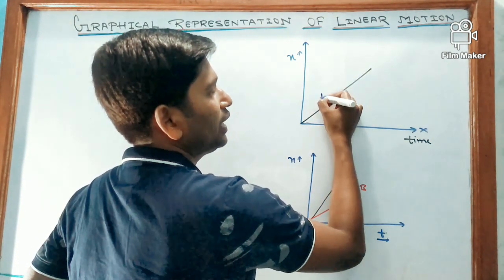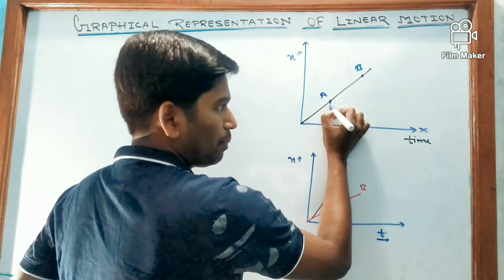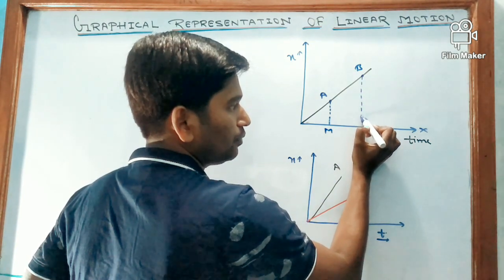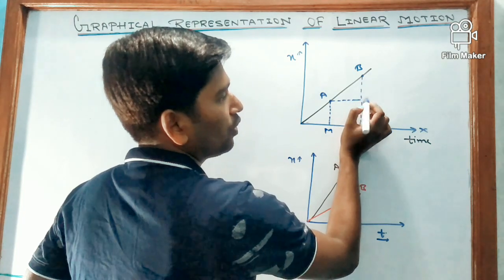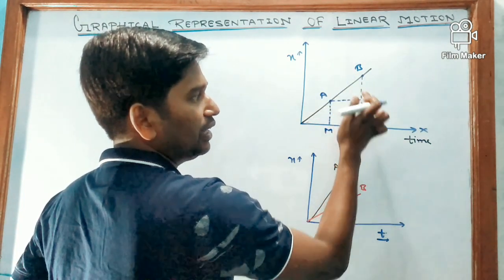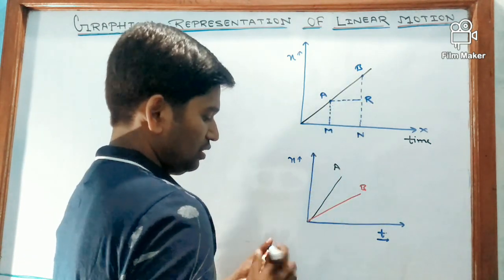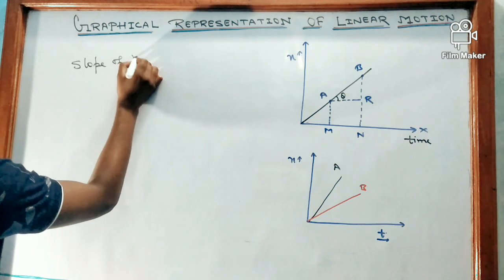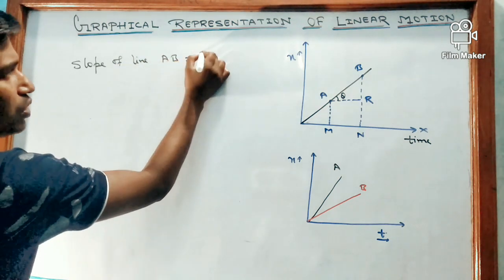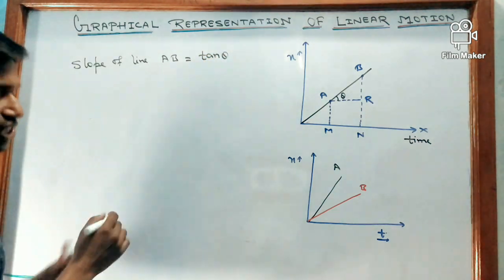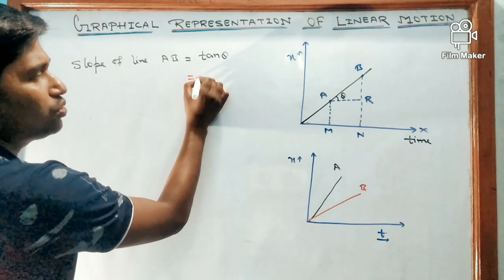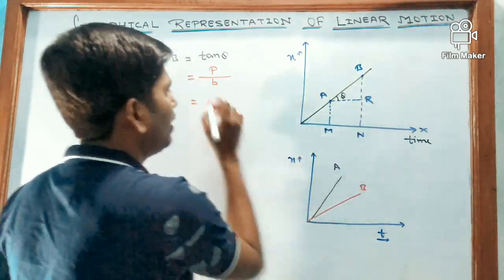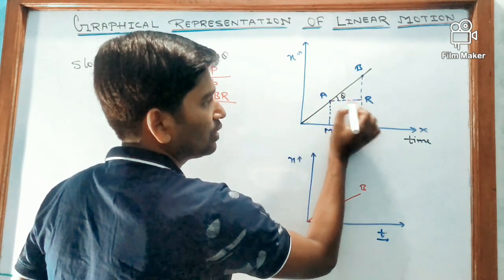Let us consider two points A and B on the graph. Draw two perpendiculars: one from point A to M, and another from point B to N. Join them to get a triangle ABR. Let the angle at A be theta. Then the slope of line AB equals tan theta, and tan theta equals perpendicular divided by base, where perpendicular is BR and base is AR.